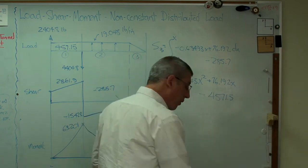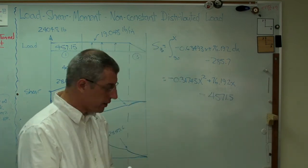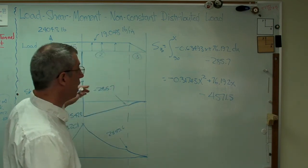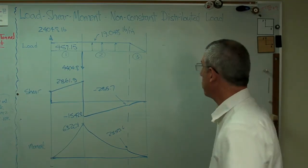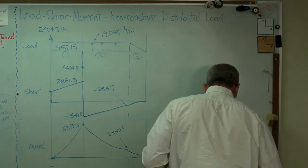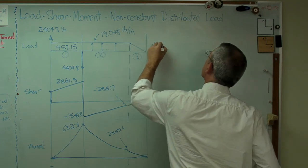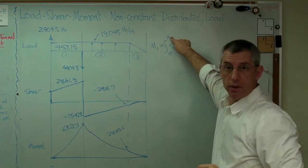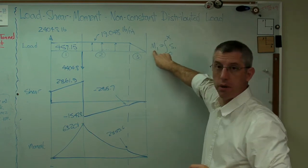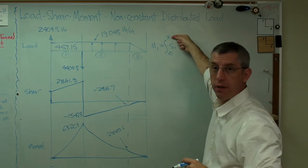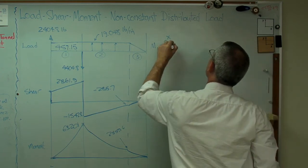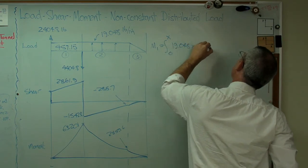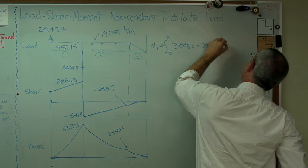Now, when it's time to do the moment, you're going to do the exact same thing. You're going to take these shear expressions and integrate them in the exact same way. Now, let's do the moment. So we've got the moment in section 1. It's just the integral of shear in section 1 from 0 to x. And remember, again, x, we don't want this to be a number. We want it to be a function of x. So we're going to leave x in the upper limit. And we know what this is. 19.048x plus 2404.8 dx.